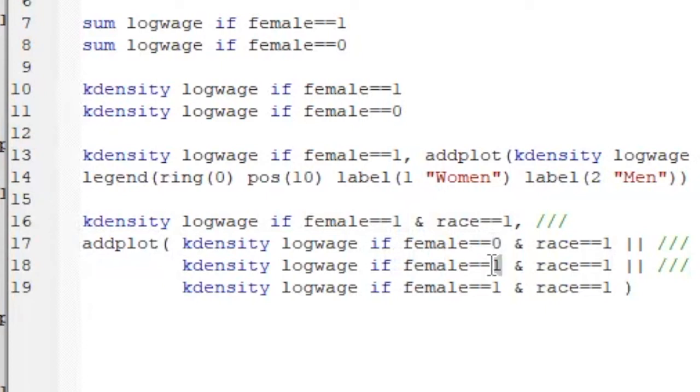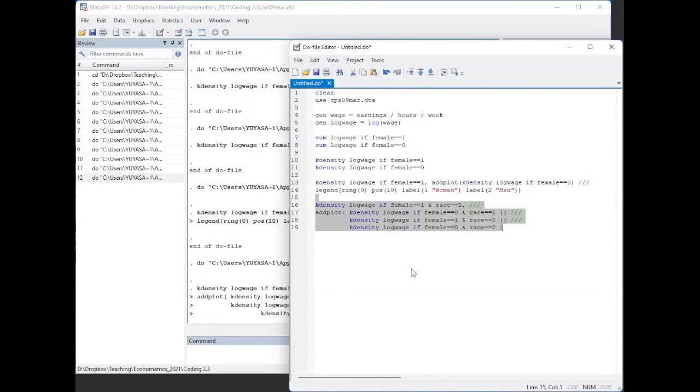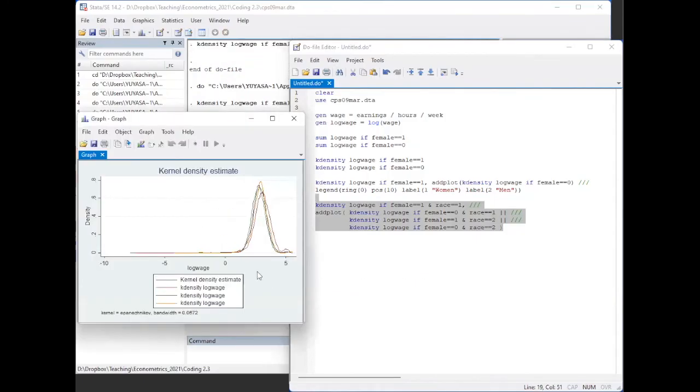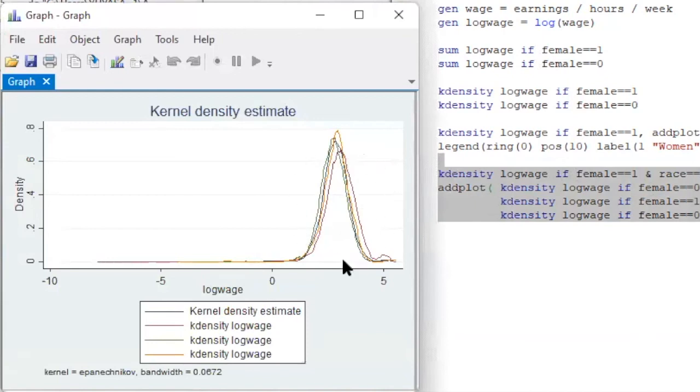And now let's make the four combinations of the conditioning criteria. By the way, in the CPS data, the race value of 1 means white, and the race value of 2 means black.